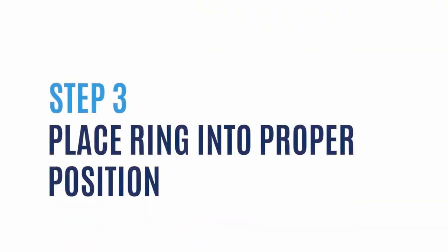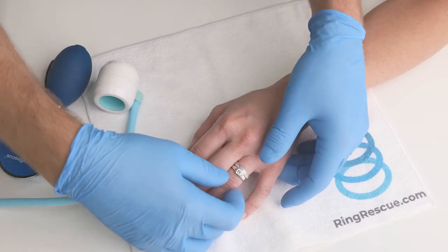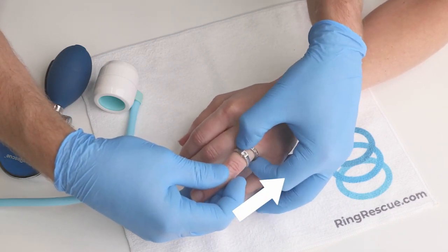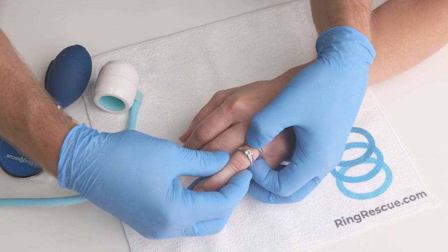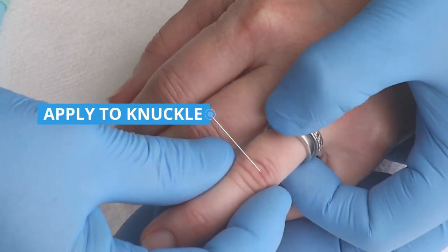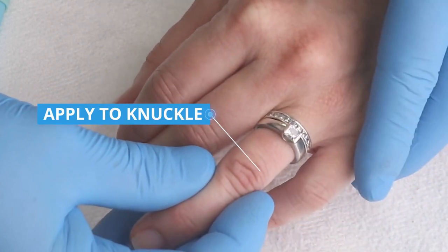Step 3: Place the ring into the proper position. Now, let's push the ring back to the base of the finger. This will allow you to place the device over the maximum area of swelling. In some cases, you won't be able to get the ring all the way back, but that's okay. In those cases, let's apply the device over the knuckle.